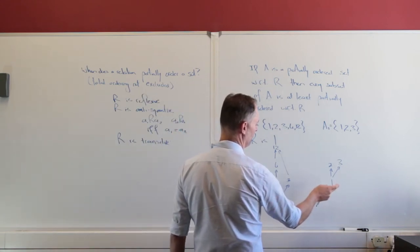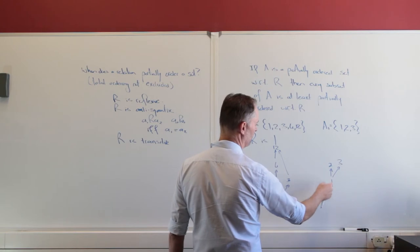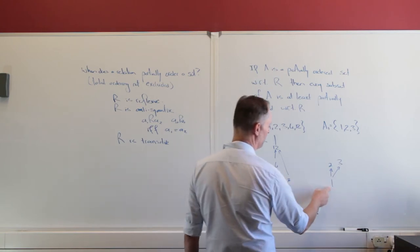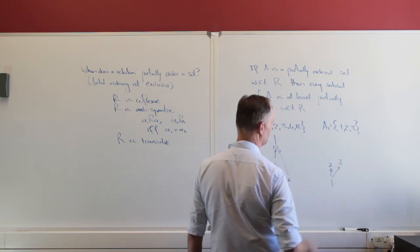Remember we have a first element, we don't have a last element, the first element is unique. We have a minimal which is 1 and we have two maximals which are 2 and 3.